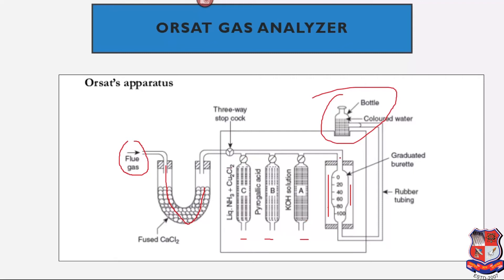When the water level in the reservoir rises, the flue gases are pushed from the burette into the first absorption chamber. The first valve is opened and the KOH solution absorbs CO2 from the flue gases. The remaining gas returns to the graduated burette, the valve is closed, and the water level is raised again. Next, the second valve is opened and pyrogallic acid absorbs the O2 content.